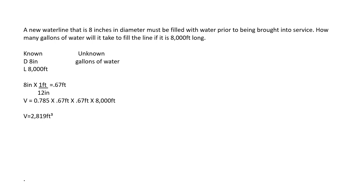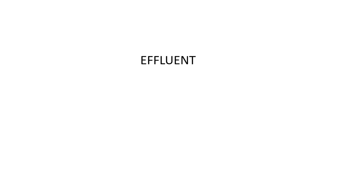We're looking for gallons, so we're going to have to convert cubic feet to gallons. There are 7.48 gallons in a cubic foot. We multiply 2,819 cubic feet by 7.48 gallons — the cubic feet cancel out — and when you do your multiplication you're left with an answer of 21,086 gallons. So that was five questions — about 15 minutes worth — on volume in a pipe solved in gallons. This is for learning purposes. If it helps you too, that's great. Thanks.